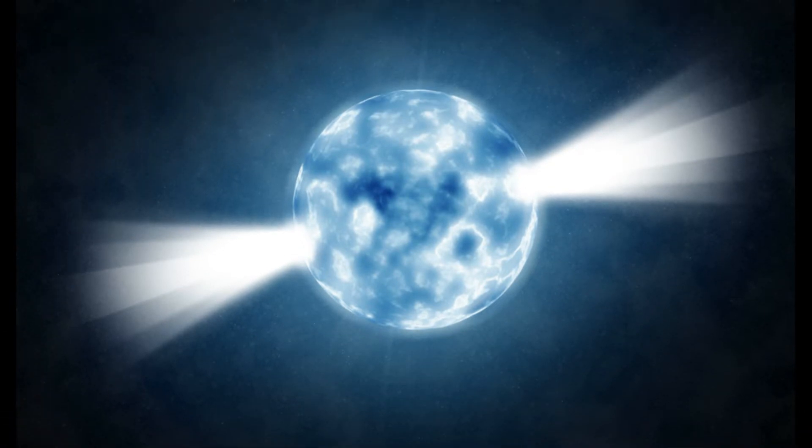PSR B1257 plus 12, 1.4 solar masses, 20 km in diameter.